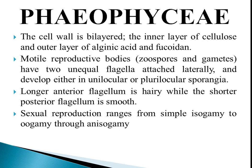Sexual reproduction ranges from simple isogamy to anisogamy to oogamy. All three types of sexual reproduction are found among different members of this group.